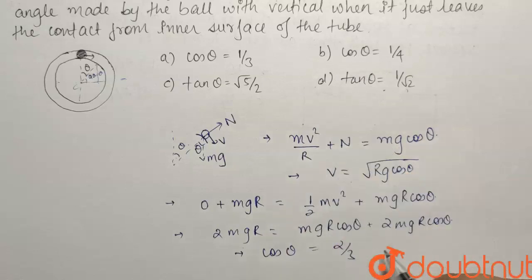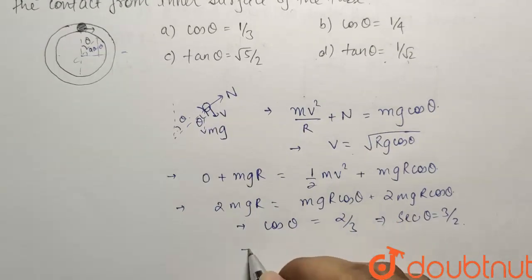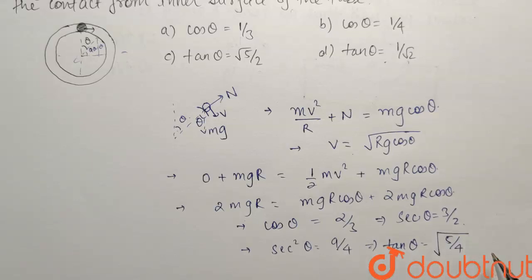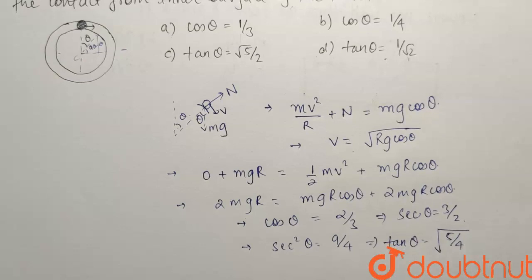Now we have to find out the value of tan. So what I will do, sec theta equals to 3 by 2. So sec square theta will be equals to 9 by 4 and if I subtract 1 from it, tan theta will be equals to 9 by 4 minus 1 that is 5 by 4 under root. So 5 by 4 under root will be nothing but under root 5 upon 2.